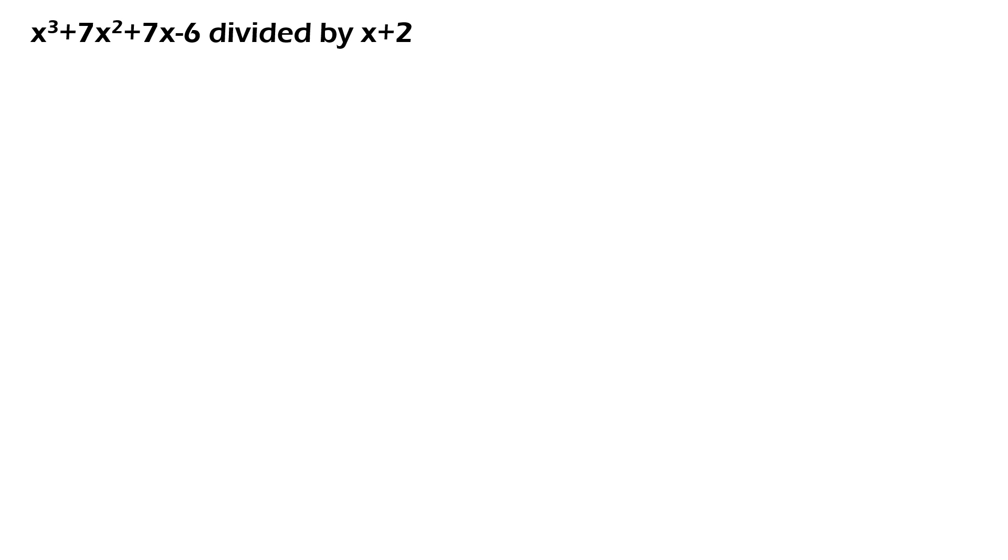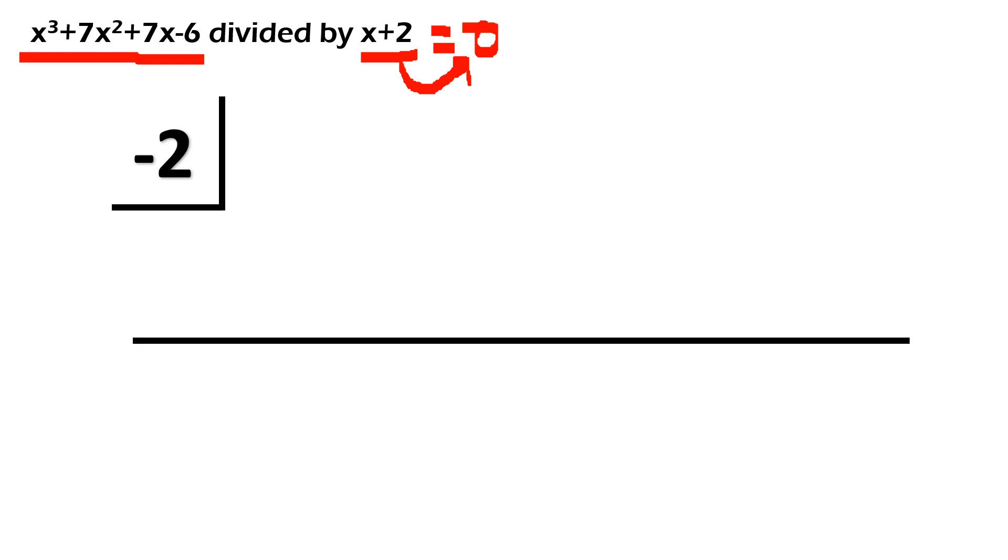First example natin is X cubed plus 7X squared plus 7X minus 6 divided by X plus 2. Okay, first step natin is for us to get the value of C. So, paano siya kukunin? Using your divisor, transpose nyo yung positive 2. So, yung value na makukuha natin dyan is negative 2. Next step is for you to get all the numerical coefficients from the polynomial, from the dividend. So, sa 1X cubed, yan ay 1. And then, followed by positive 7, positive 7, and then negative 6.